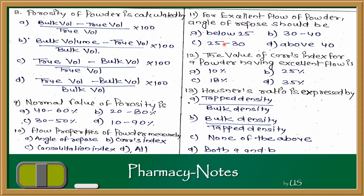Question 12: The value of Carr's index for a powder having excellent flow is? Carr's index below 10% indicates excellent flow property. The answer is A — 10% (below 10%).